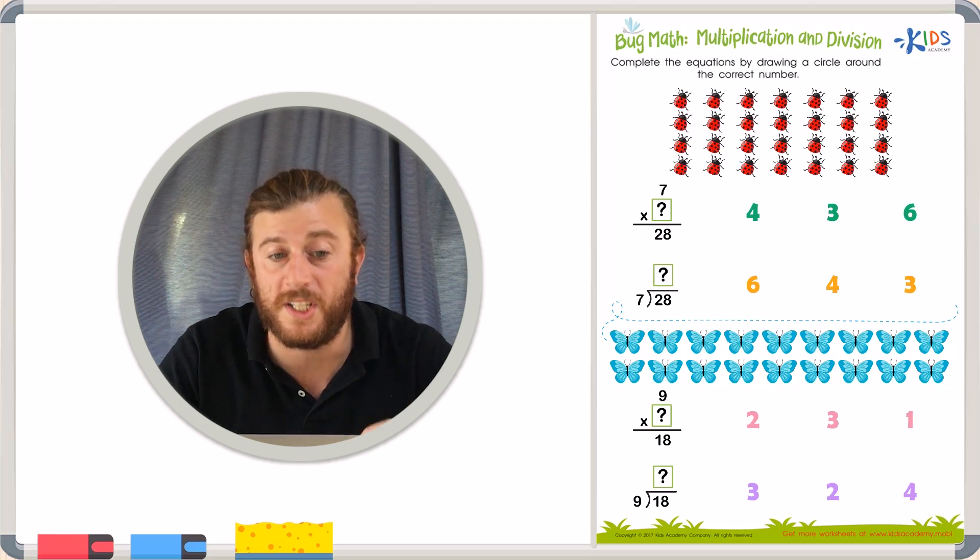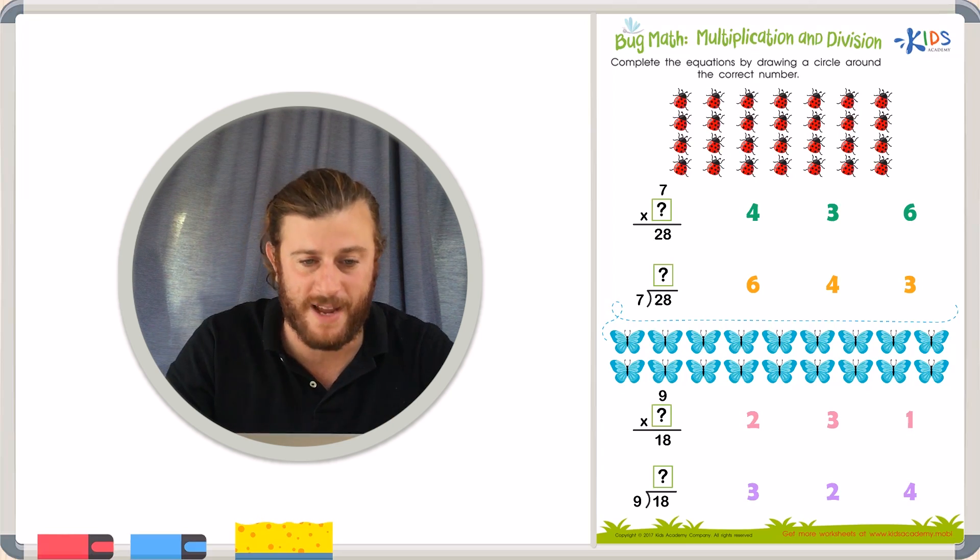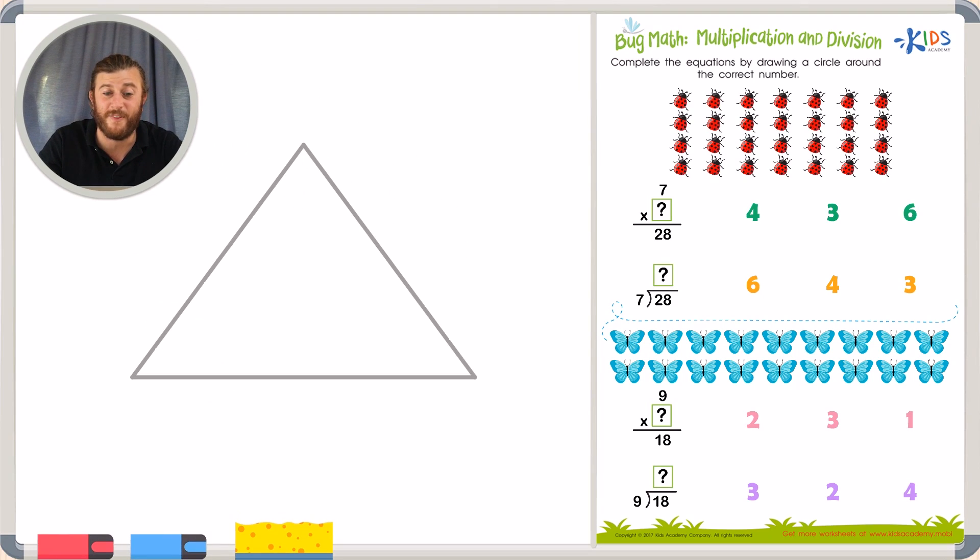But we can make it really simple by using something called a fact family. Whenever I solve fact family problems I like to think about a fact family triangle. And in this fact family we're missing a number. We know that we have the number 28 at the top of the fact family. We also know we have a 7 somewhere on the bottom. We have to find this missing number.